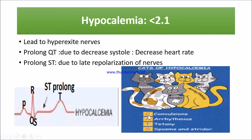The mnemonic for hypocalcemia symptoms is CATS: Convulsions, Arrhythmia, Tetany, and Stridor with spasm. For ECG changes with hypocalcemia, there will be a prolonged QT interval — the QT denotes ventricular depolarization to repolarization — and here ventricular systole is decreased, resulting in a decreased heart rate.